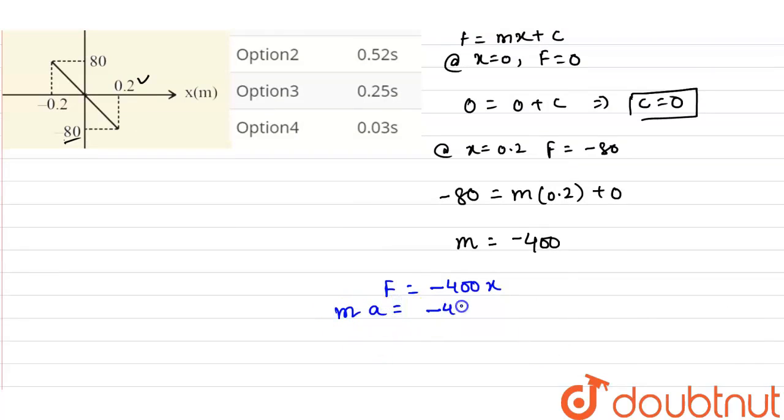Now the force is mass into acceleration, so this will be equals to minus 400x, and acceleration in SHM is minus omega square x.